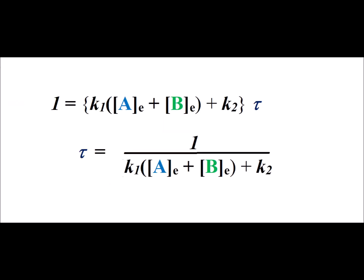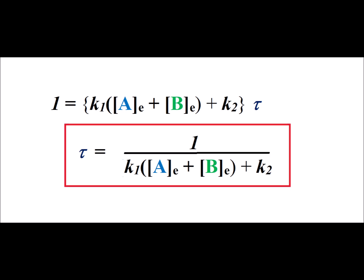Therefore, we replace the natural log of D divided by D sub zero by the number one, and then we get the expression on the right-hand side where we replaced t by tau. Then dividing through, we get that tau is equal to one over k1 times the equilibrium concentration of a plus the equilibrium concentration of b, plus k2.